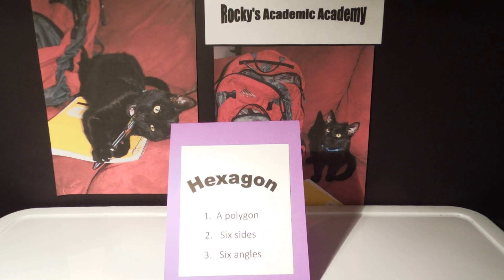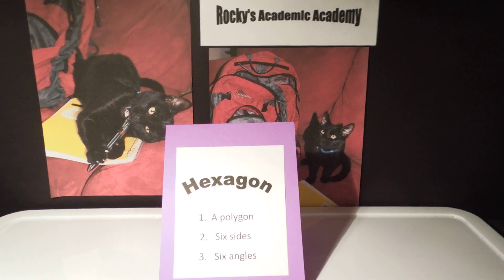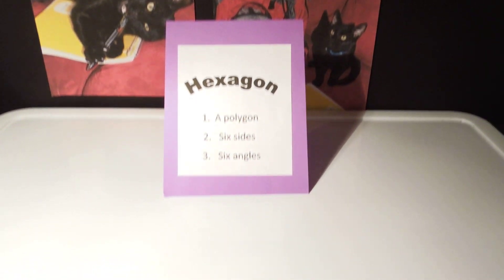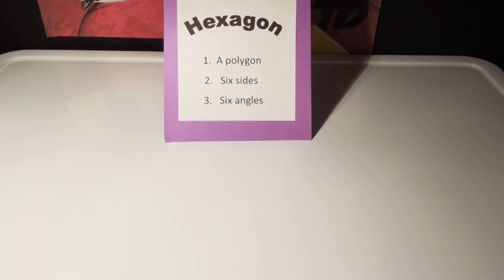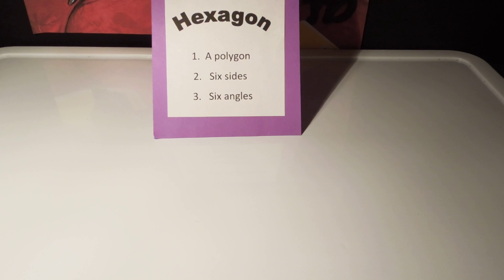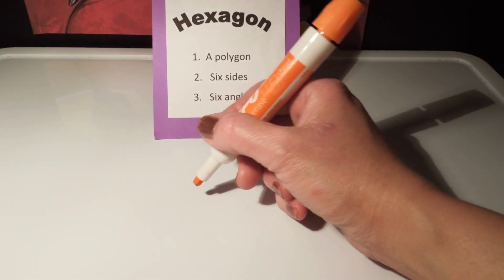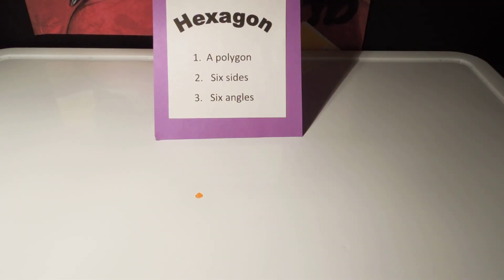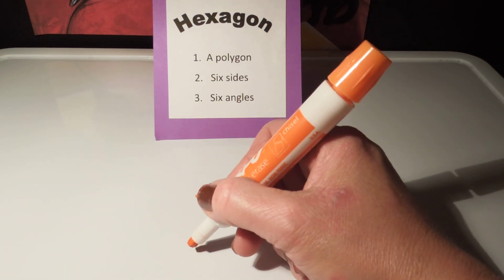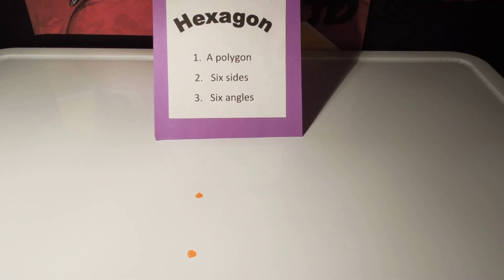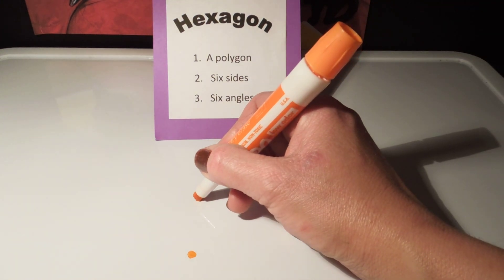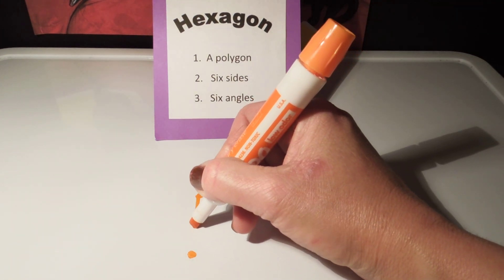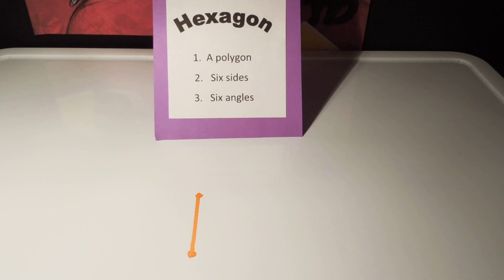The first step in drawing a hexagon is to draw some points. A point happens to be a dot in space. I'm going to go straight down and draw another point, then connect the two points using a vertical line segment.